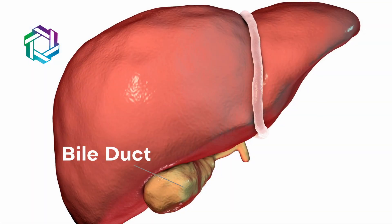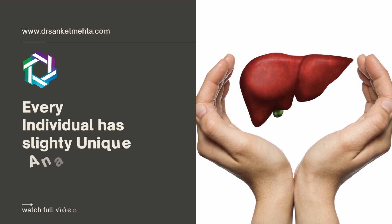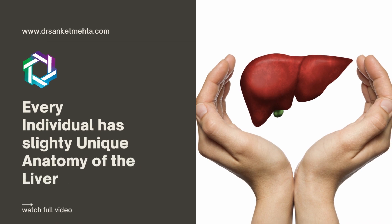We also have the bile ducts, which follow the portal vein and the hepatic artery and drain the bile that is produced by the liver. To add to the complexity, every individual has a slightly unique variation in the anatomy of the liver, which is why it is quite a daunting task to understand the anatomy of the liver and then go on to operate on it.